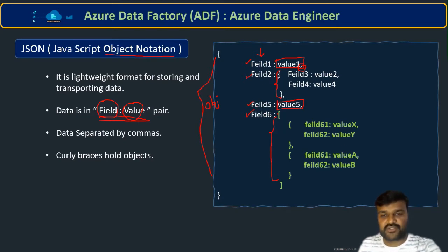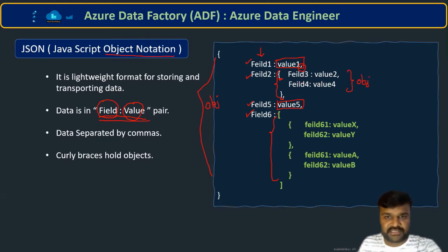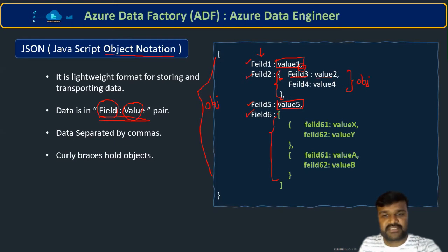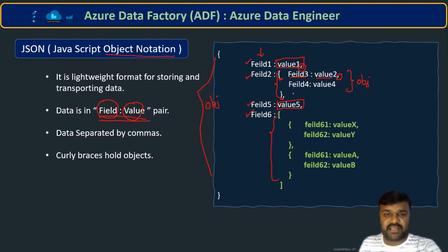Field 2 also has curly braces in its value place, so it is going to become one nested object. If you observe further, inside Field 2 you have some other fields and values — that is Field 3 and Field 4 with their corresponding values — and they must also be separated with a comma. Such nesting is possible in JSON.